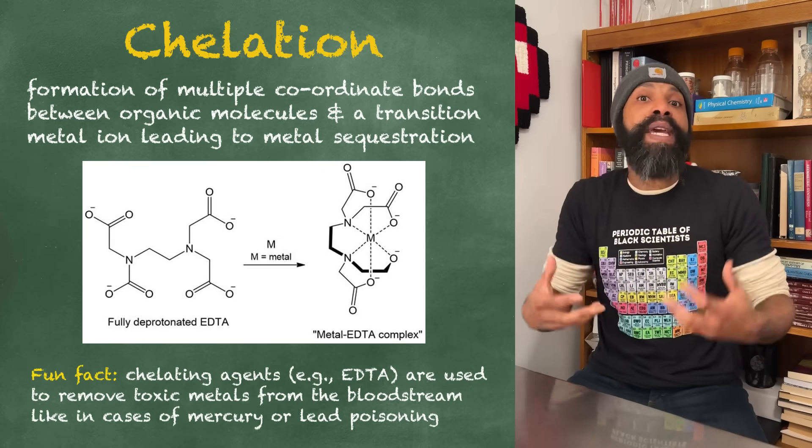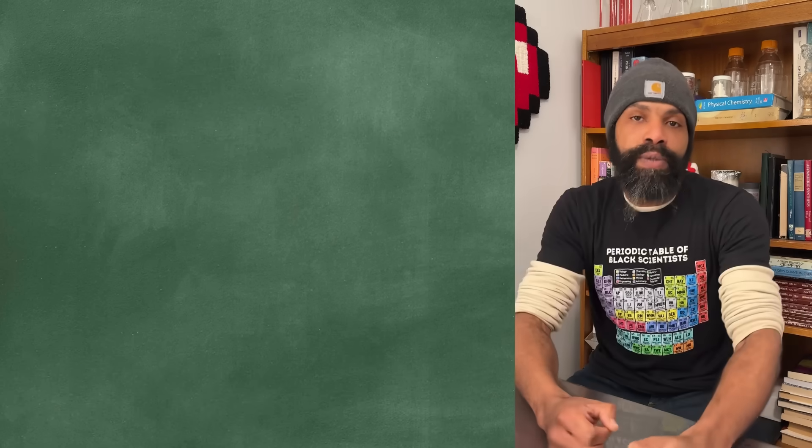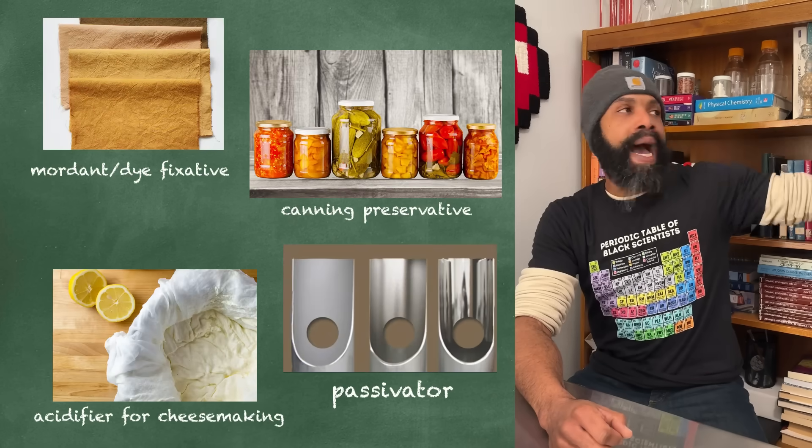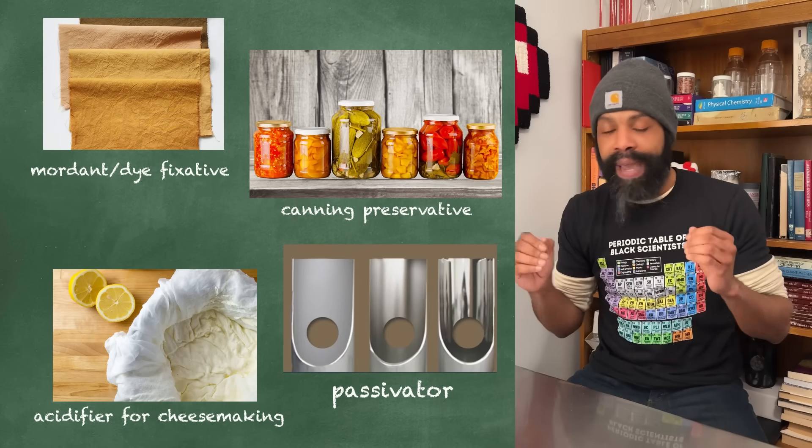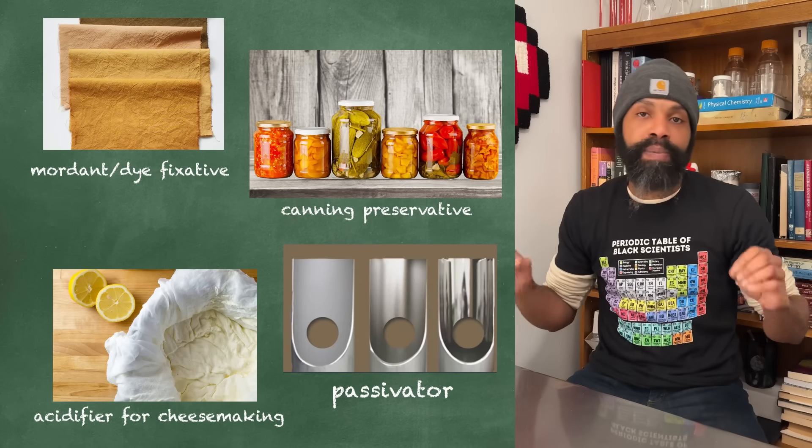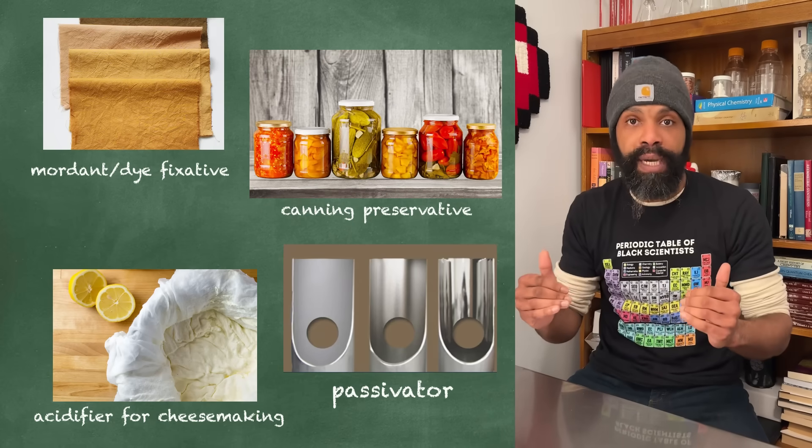So with all these uses and more, like it gets used in dyes as a mordant, it gets used in metalworking because it can passivate the surfaces of metals, which is a process where you make a coating on the metal so that it doesn't react with things as much.